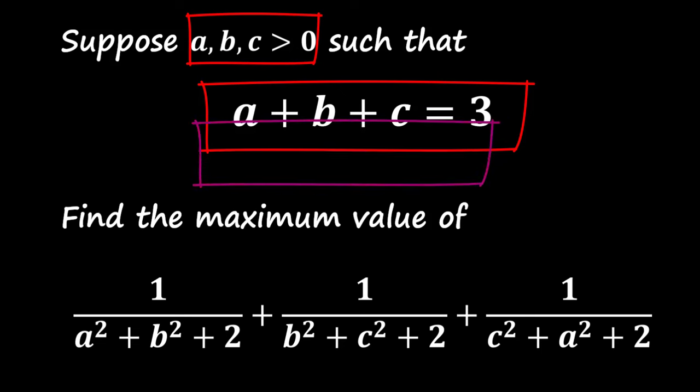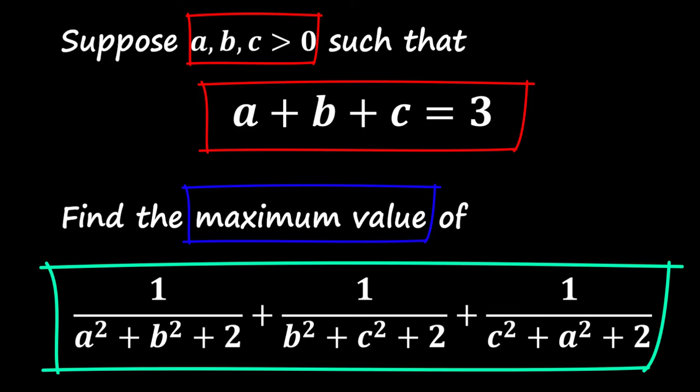Our goal is to find the maximum value of the following expression: J equals 1 over A squared plus B squared plus 2, plus 1 over B squared plus C squared plus 2, plus 1 over C squared plus A squared plus 2.